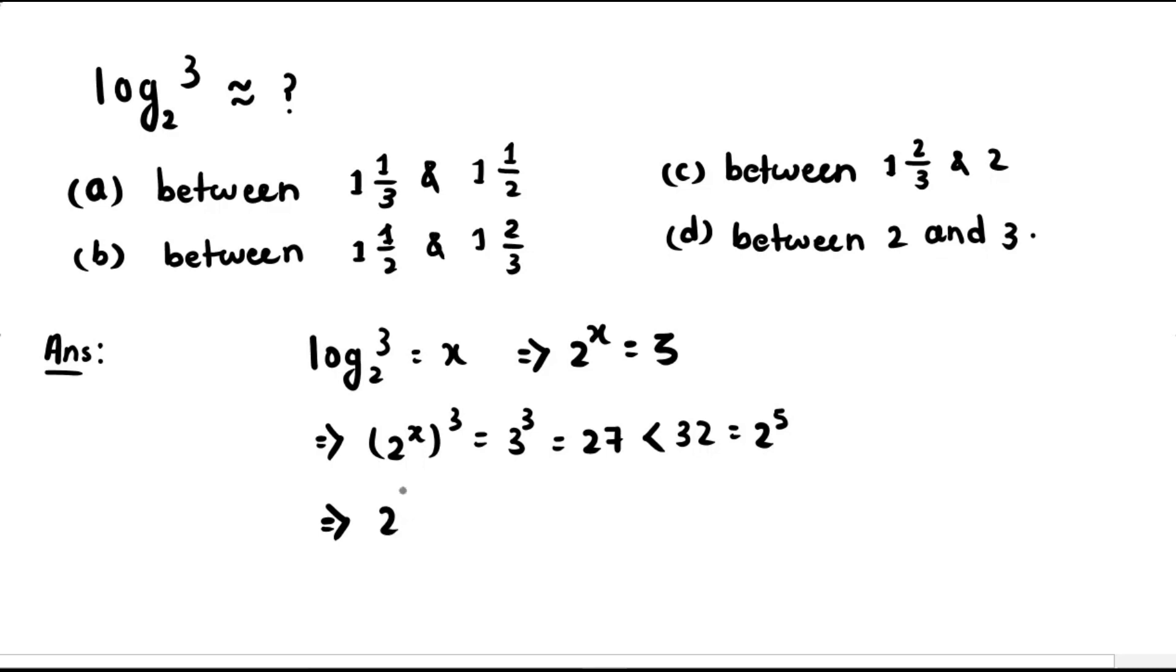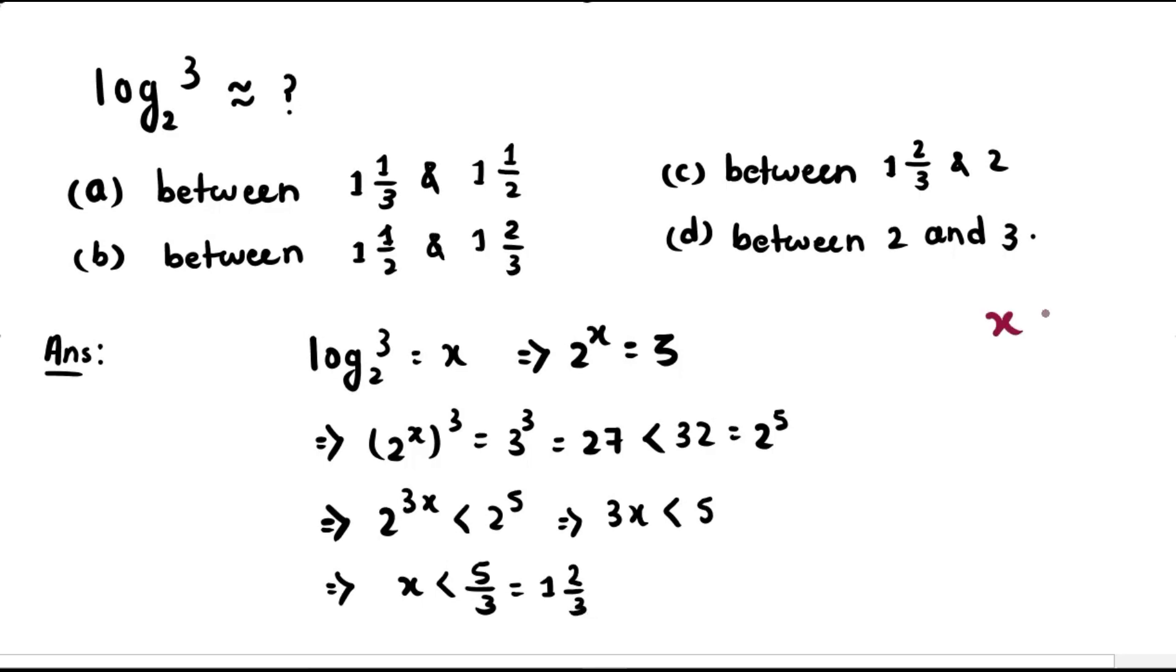Consequently, 2^(3x) is less than 2⁵, which then means 3x is less than 5. We then divide both sides by 3 and get x is less than 5/3, which is equal to 1 and 2/3. This is an upper bound on x.